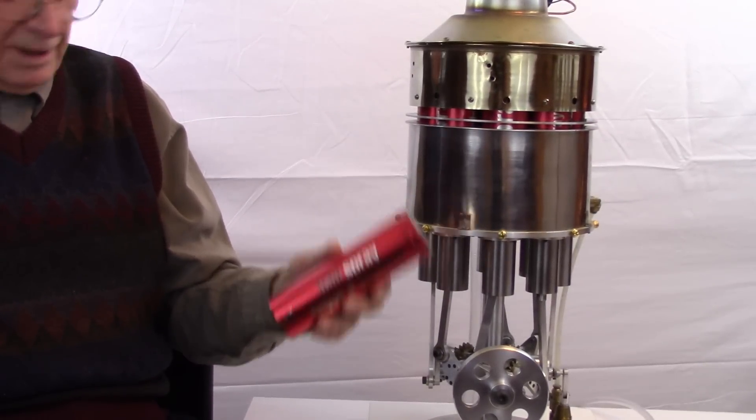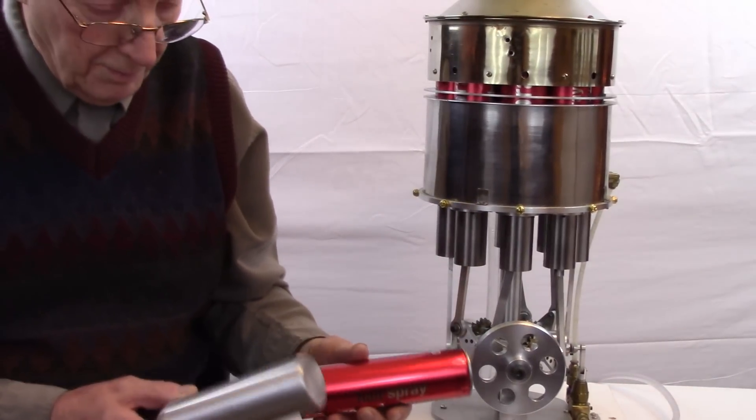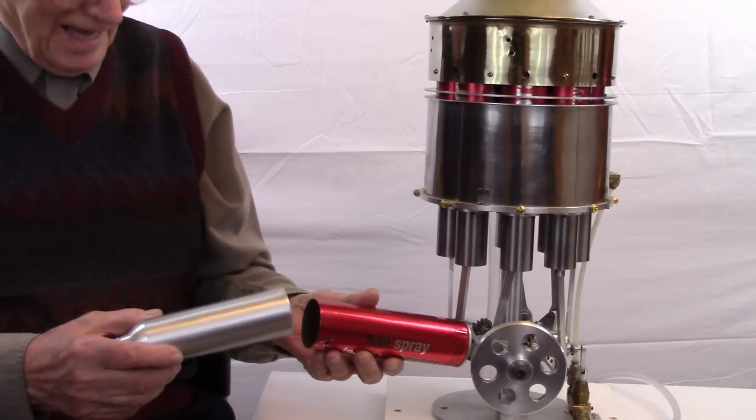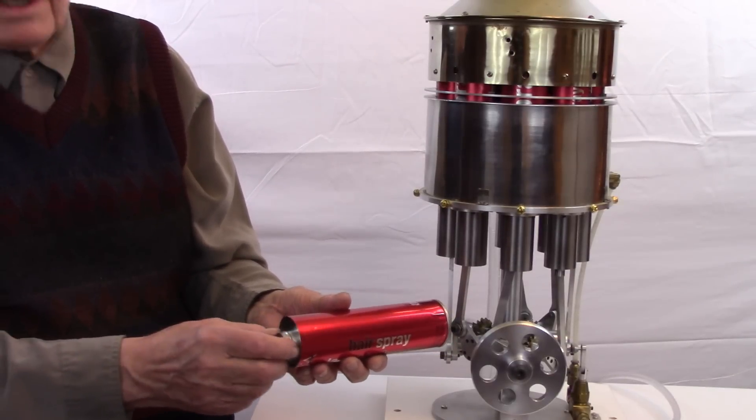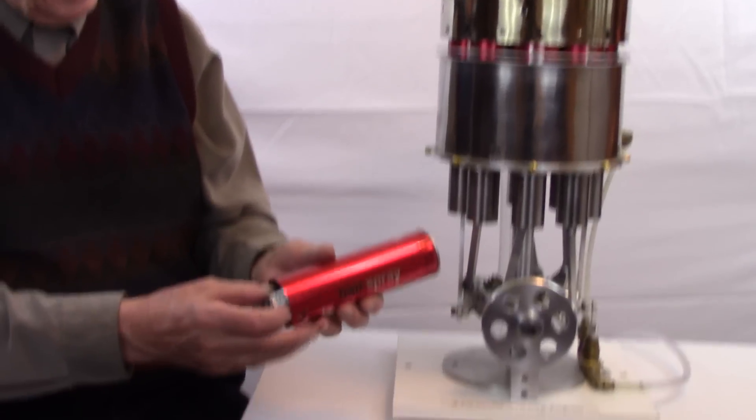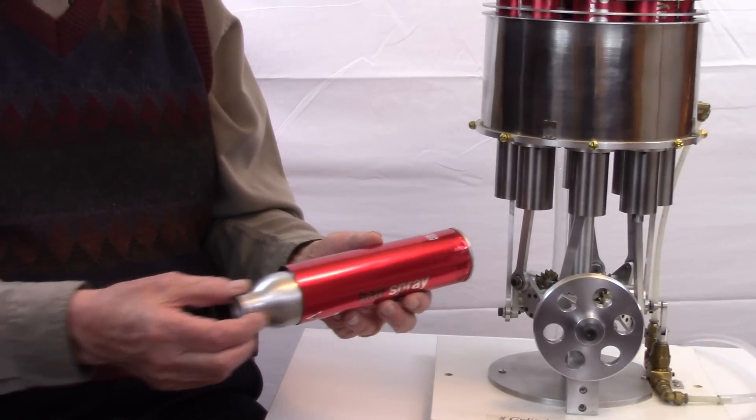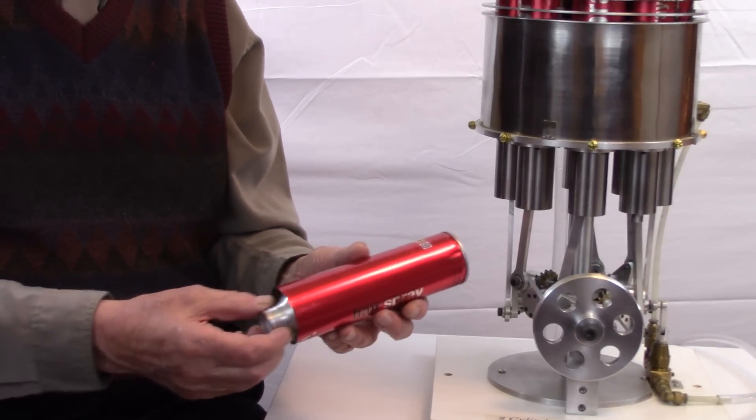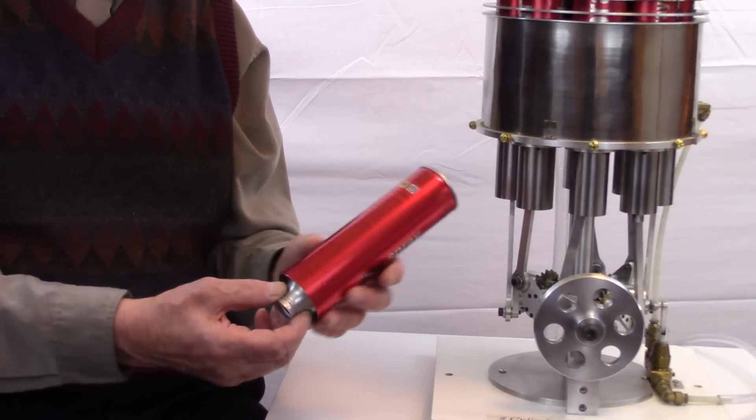This is made out of steel and then I had to look for and found a suitable aluminum can that fits inside with just a little bit of a clearance between the two to allow the air to shuttle from the top to the bottom and so forth. That's the displacer action because it's displacing the air from the top to the bottom.